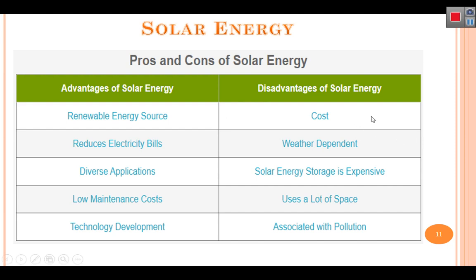For the cons or disadvantages of solar energy: the equipment is very expensive. It depends on weather — on a sunny day it can produce a lot of energy, but on a rainy day it produces less. Solar energy storage is very expensive because it needs batteries that need to be replaced over time. It also uses a lot of space to install solar panels.